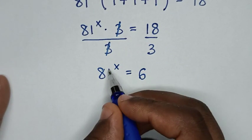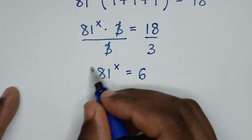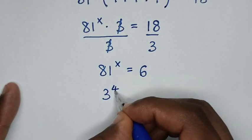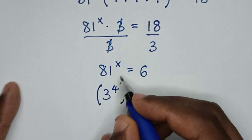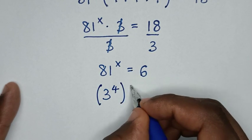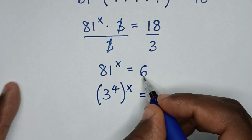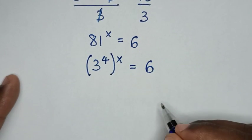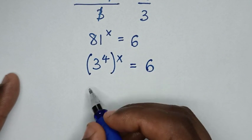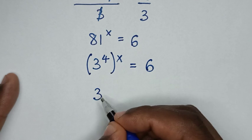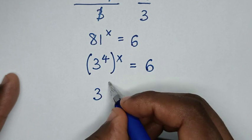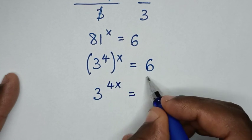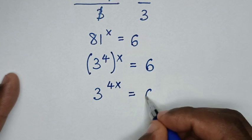From here, 81 is the same as 3 power of 4, so we have 3 power of 4 in bracket, to the power of x, equal to 6. Then it will be 3 power of 4x is equal to 6.